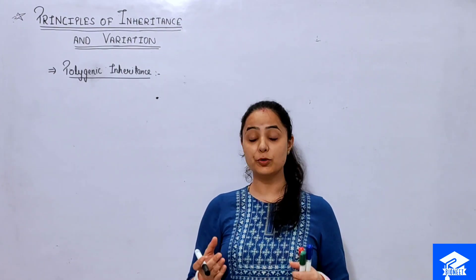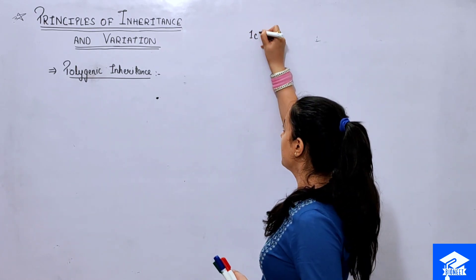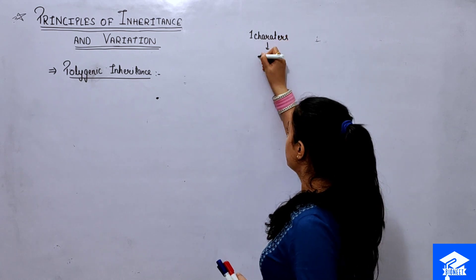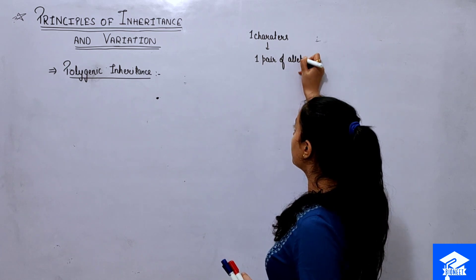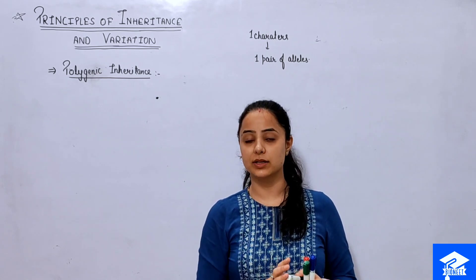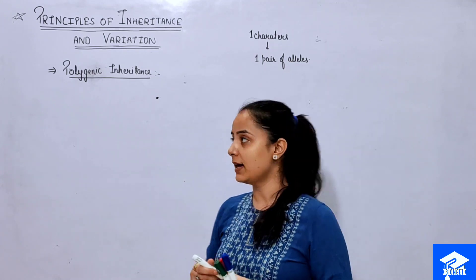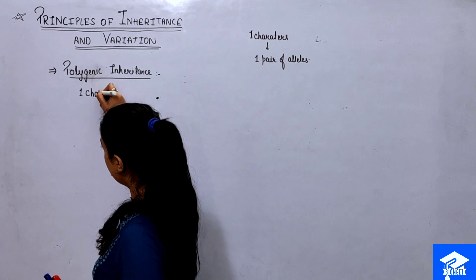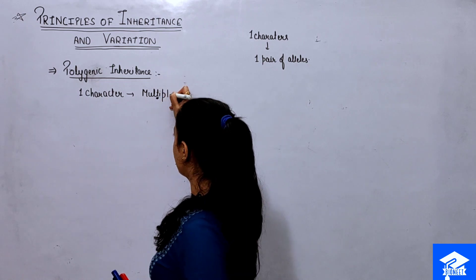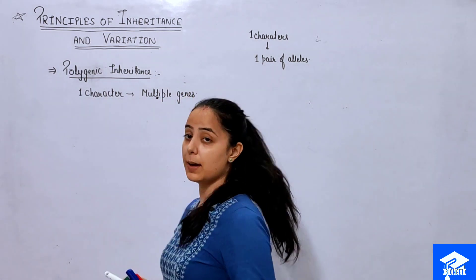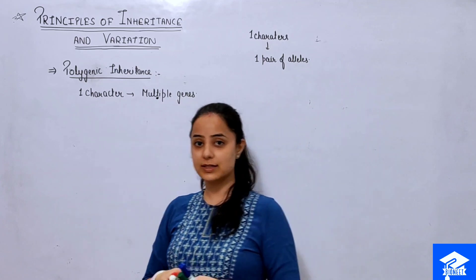Now let's discuss polygenic inheritance. In Mendelian genetics, we talked about one character controlled by one pair of alleles — for example, capital A and small a. Polygenic inheritance is different: it tells us that one character is controlled by multiple genes. An important example from the NCERT textbook will help us understand this concept.